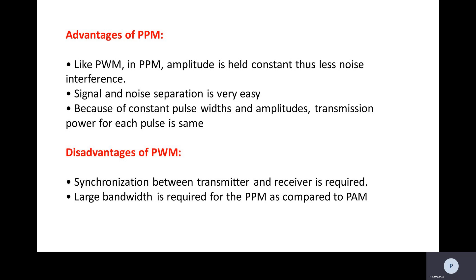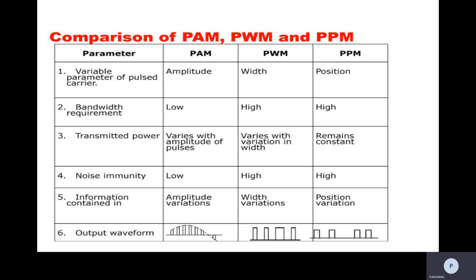PPM also has advantages and disadvantages. Like PWM, amplitude is constant in PPM, so there is less noise interference and signal-noise suppression is easy. Transmission power of each pulse is the same. Disadvantages: synchronization between the transmitter and receiver is required, and a large bandwidth is required for PPM compared to PAM. These are the disadvantages of pulse position modulation.